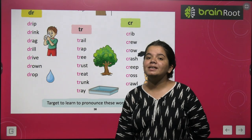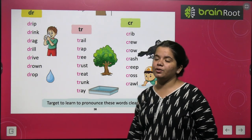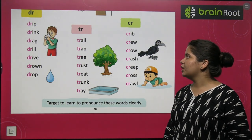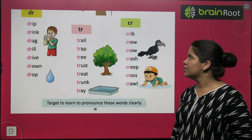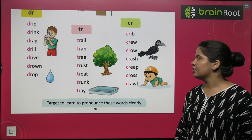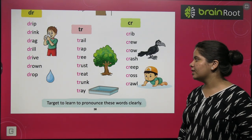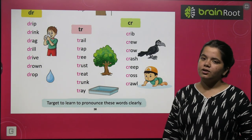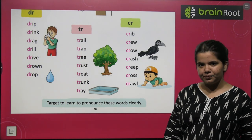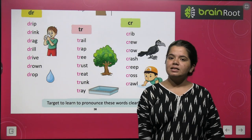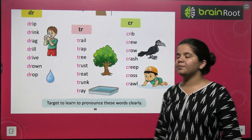Next is TR — words with TR: trail, trap, tree, trust, treat, trunk, tray. These are all the TR words.